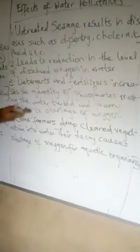Untreated sewage and waste also leads to a reduction in the level of dissolved oxygen in water. Detergents and fertilizers, when washed into water bodies, increase the quantity of nutrients, making the water turbid, unclear, and foamy, leading to a shortage of oxygen. Decaying vegetation also causes a shortage of oxygen for aquatic organisms. The effect is mostly on aquatic organisms — the plants and animals that live in the water.